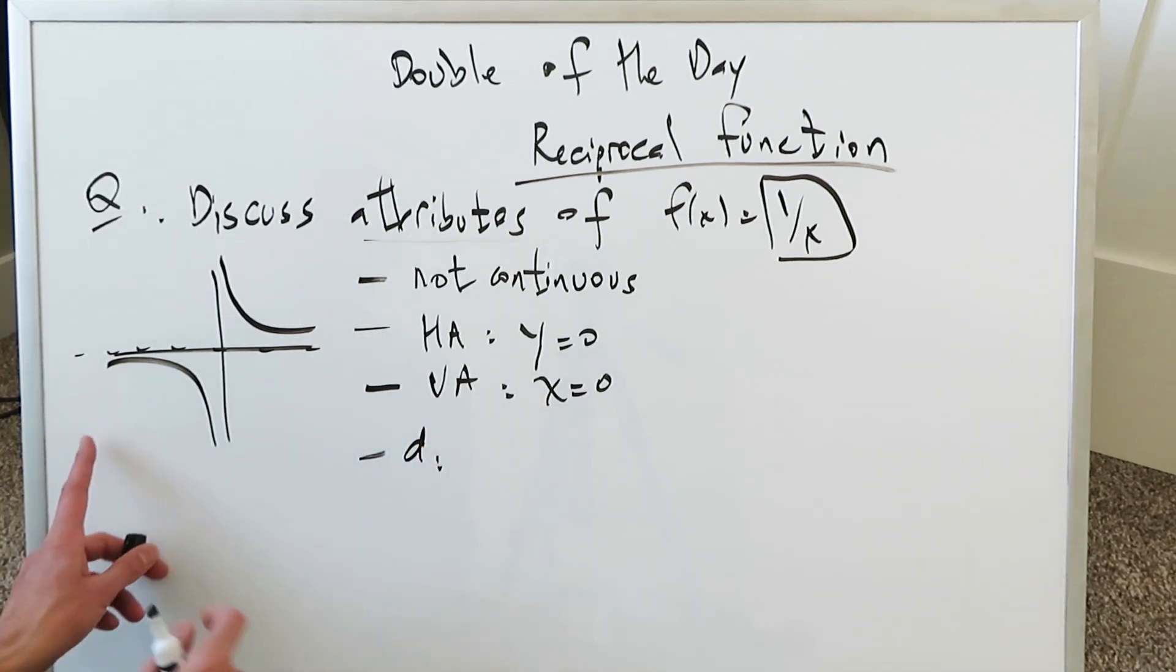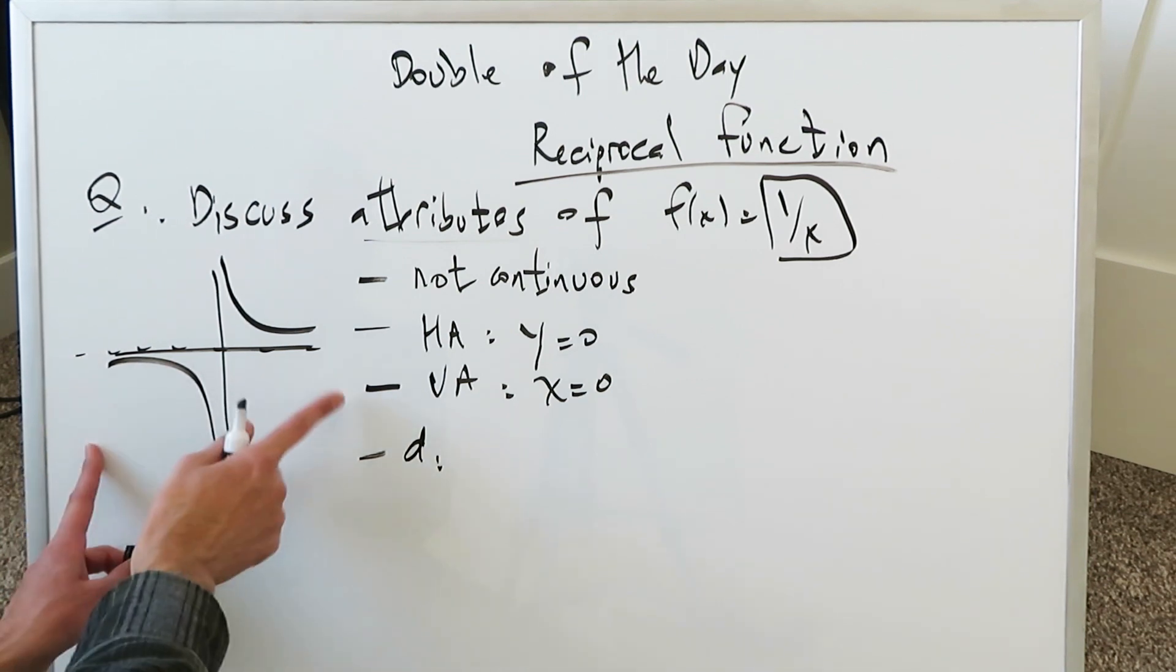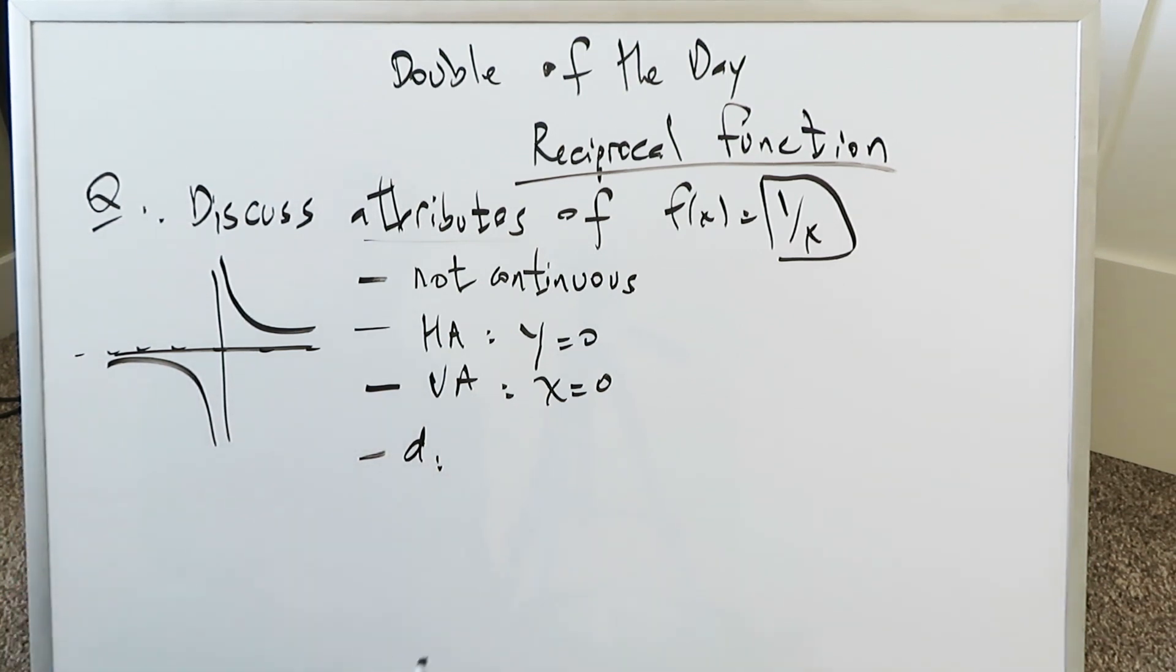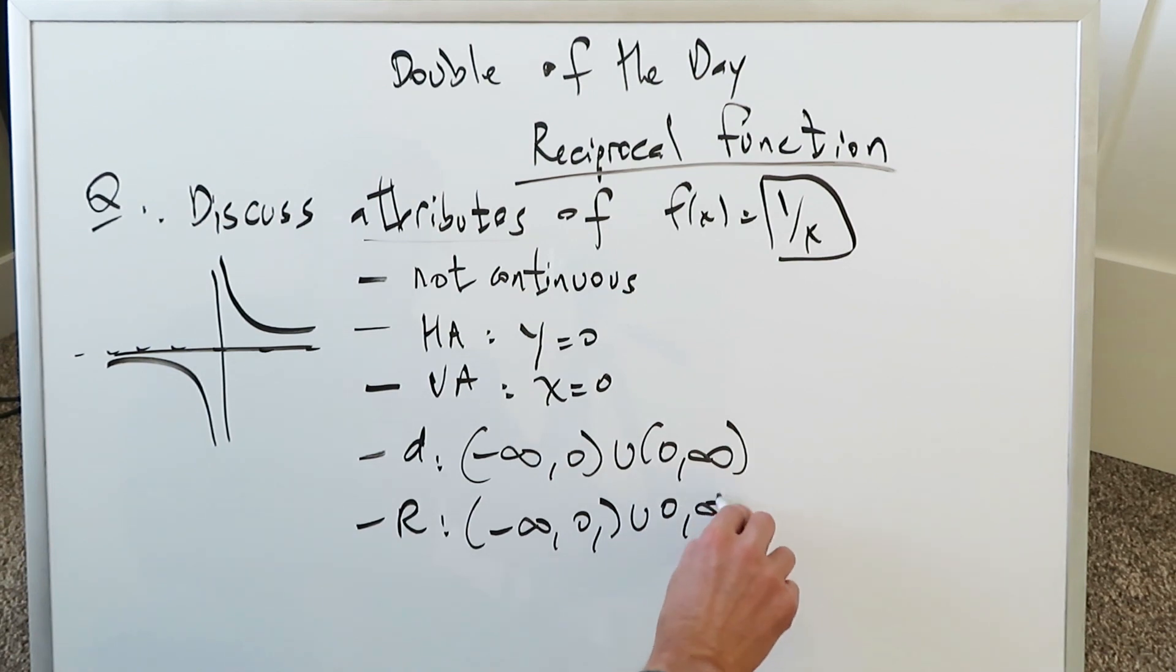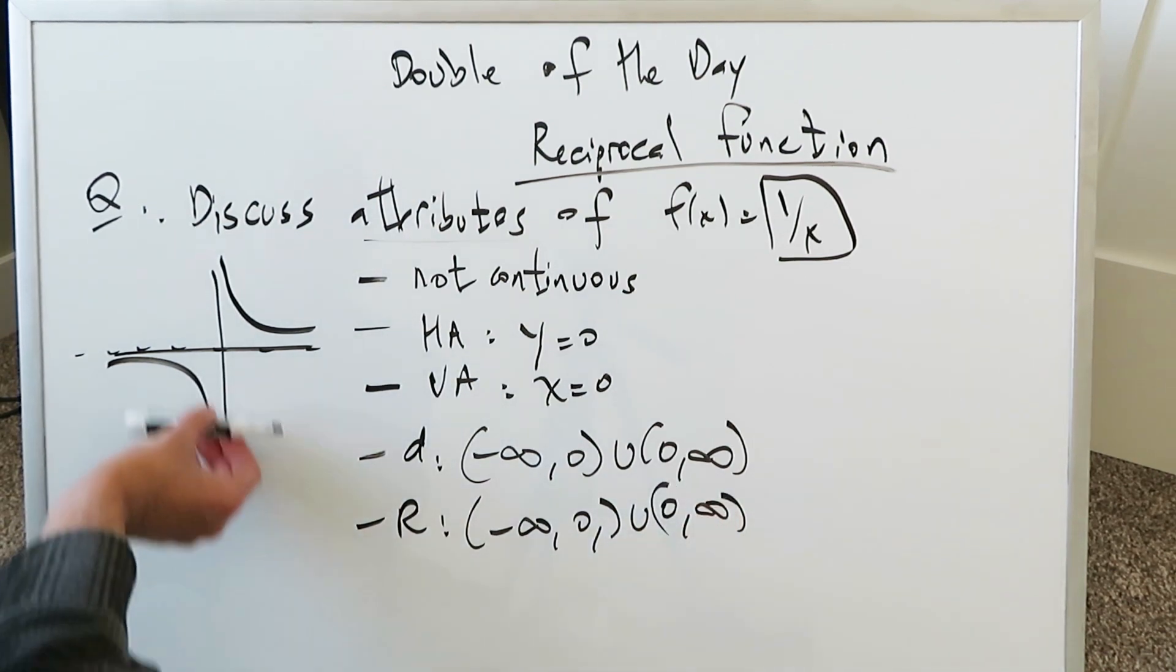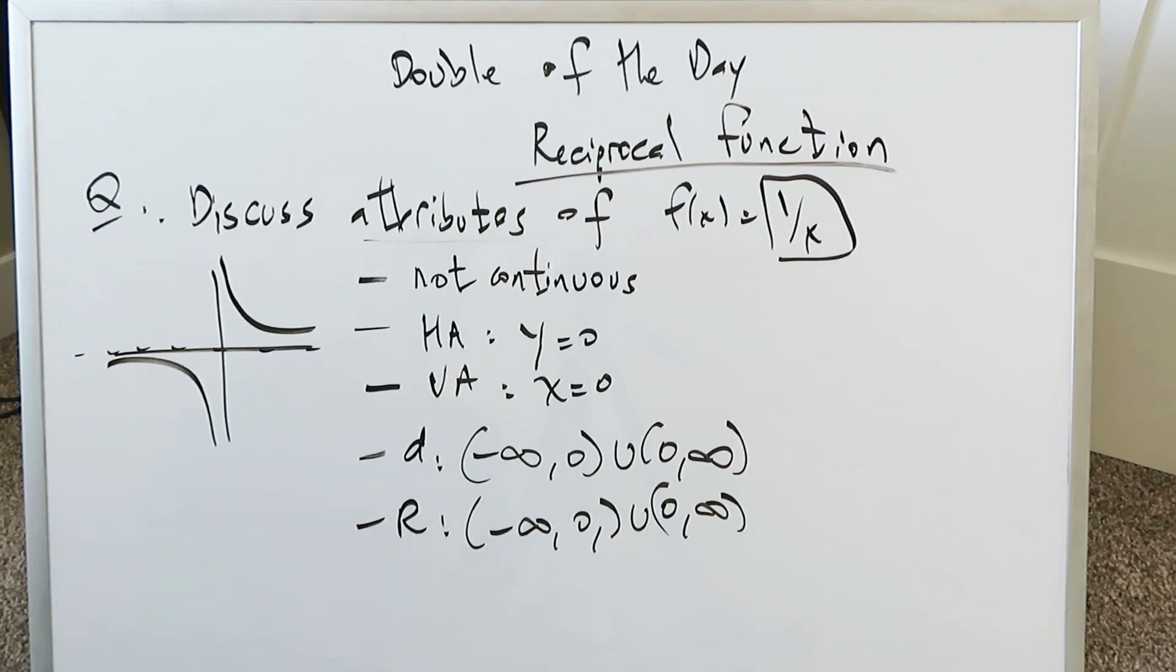Another thing is with regards to its domain. You can see in terms of the left to right extent, the x-axis values, the domain is minus infinity coming up to 0 but not including 0, and then from 0 jumping across your y-axis and going onward to infinity. That right there is your domain. And interestingly, the range is exactly the same. You will see it minus infinity to 0 and then 0 to infinity because the range is from down to up, the lowest to the highest extent.